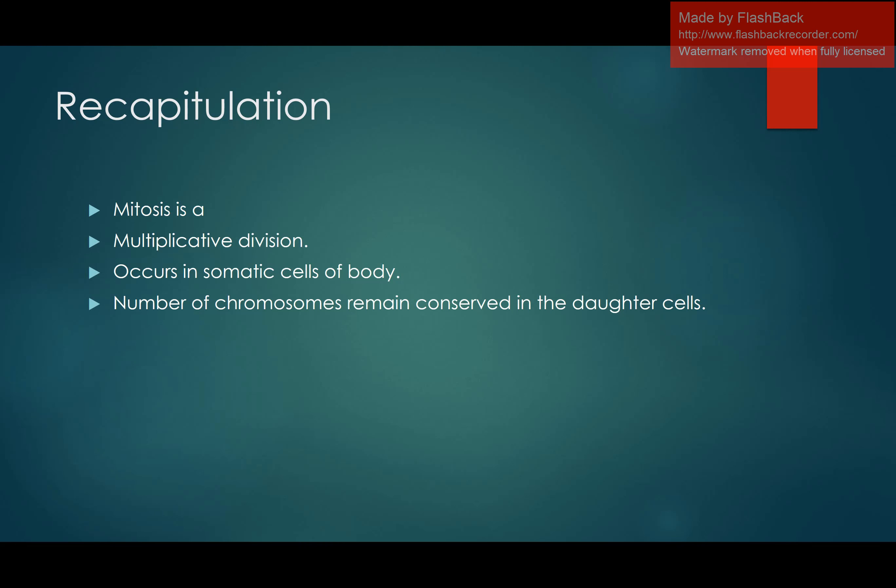Mitosis, or multiplicative division, takes place in the somatic cells of the body. Somatic cells are the normal body cells which have no role in reproduction — like our skin cells, epithelial layer cells, hair cells, and nail cells. In Mitosis, the number of chromosomes remains conserved and the same in the next generation. Moving on, we will now see what is the significance of Mitosis.